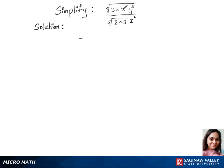Let's simplify this question. We'll first separate the fifth root between the terms. So that's fifth root of 32 times fifth root of x power 10 times fifth root of y power 5 over fifth root of 243 times x square.